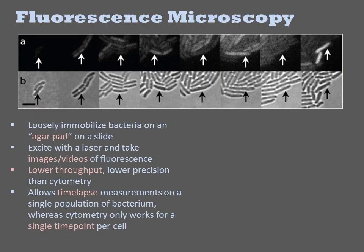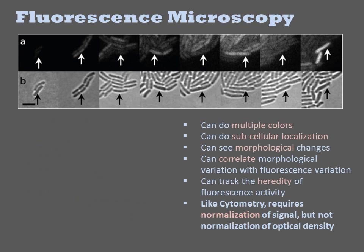Another common way of measuring fluorescence is to use microscopy. In this experiment, the engineers loosely immobilize bacteria on an agar pad on a slide. They then excite with a laser and take images or videos of fluorescence. Microscopy has lower throughput and lower precision than cytometry. However, it allows time-lapse measurements on the same population of bacteria, while cytometry only works for a single time point per cell. Like cytometry, depending on your instrument setup, you might be able to monitor multiple colors simultaneously.